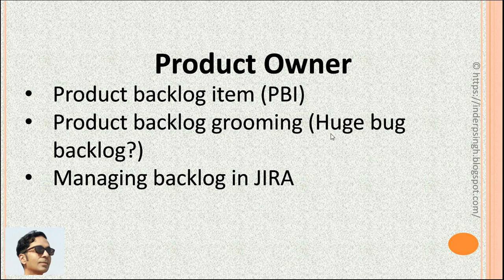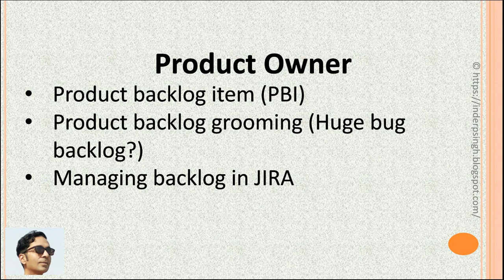How to manage Bug Backlog? The Product Owner can prioritize bug fixes based on impact to the users and customer. Also, the team may decide to add more developers for completing the bug fixes. For managing backlog in Jira, the team can use Jira software to prioritize and track Product Backlog items. The Product Owner can create the Product Backlog in Jira by adding items, setting priorities and assigning items, and progress can be tracked by the Scrum Master, developers and other team members.